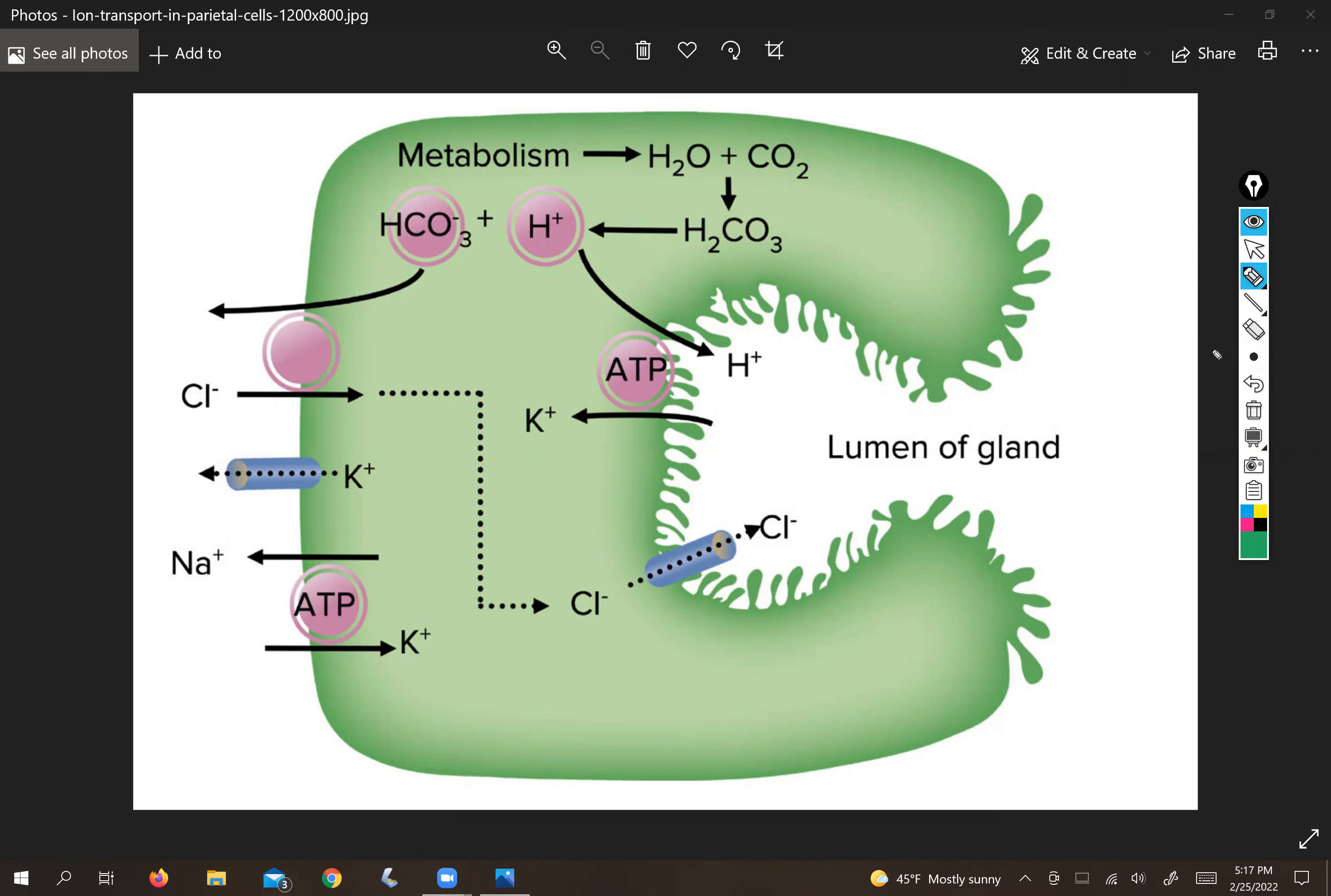Okay, so I guess I'll just put it here. So this is a parietal cell. You find these in the gastric mucosa along with enteroendocrine cells and zymogenic or chief cells.